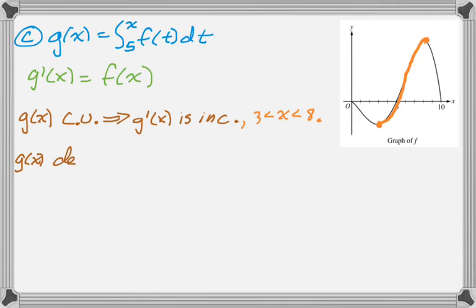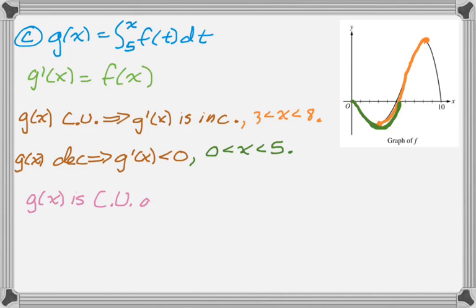g(x) is going to be decreasing whenever g'(x) is negative or less than 0, and that's the interval from 0 to 5. We combine those - we want the intersection. So g(x) is concave up and decreasing between 3 and 5, which you can see colored in on the picture there. That's part C.